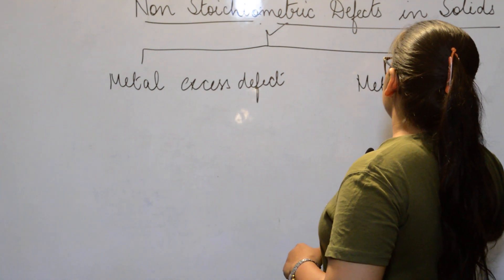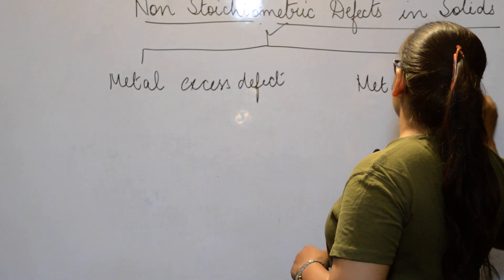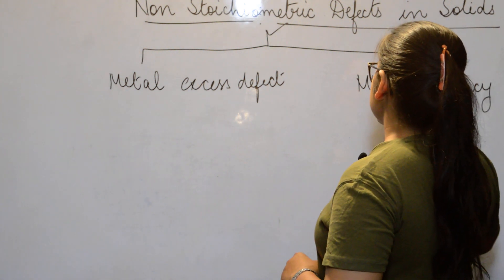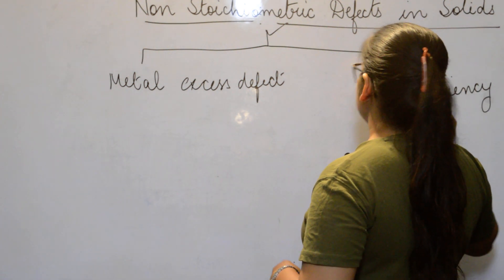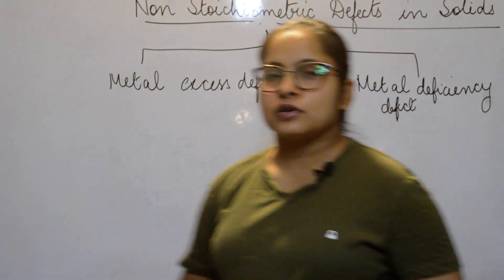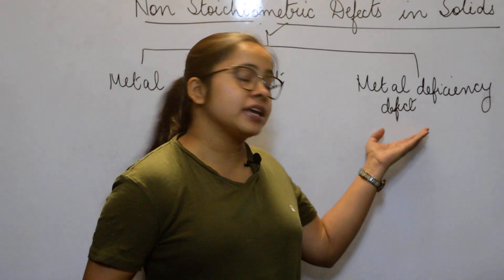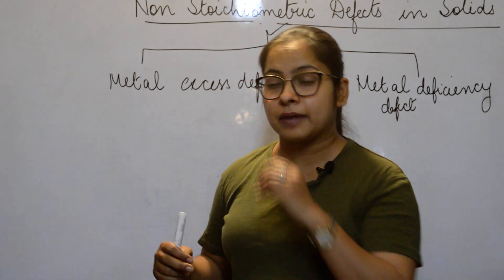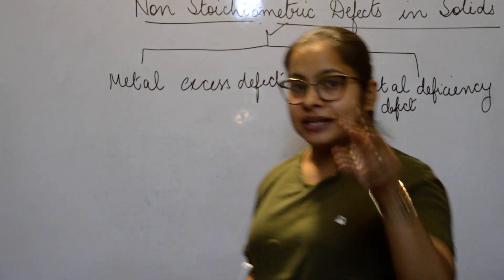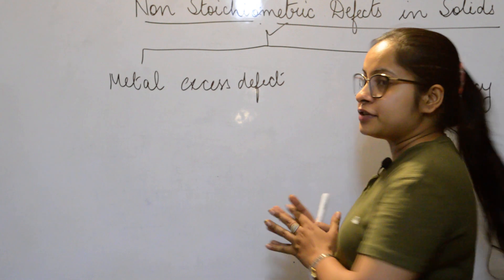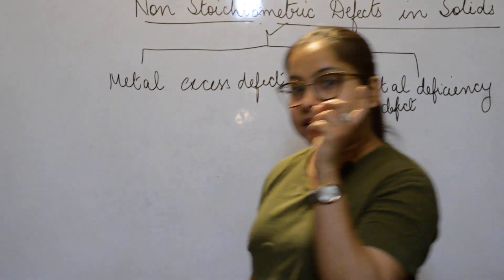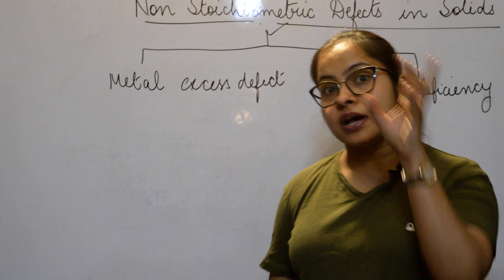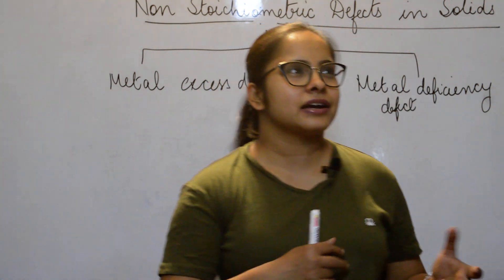The second type is metal deficiency defect — deficiency means shortage. So either there is metal shortage or metal excess. These are the two types of non-stoichiometric defects: metal excess defect or metal deficiency defect.